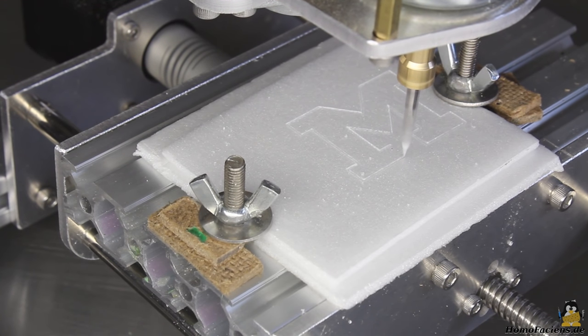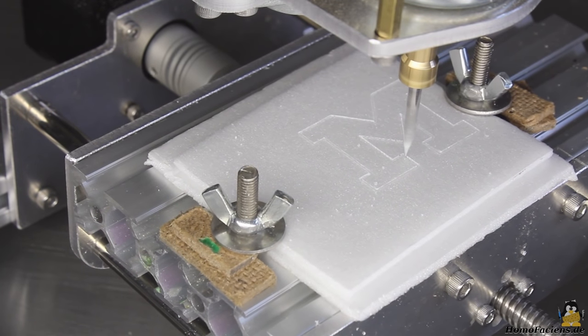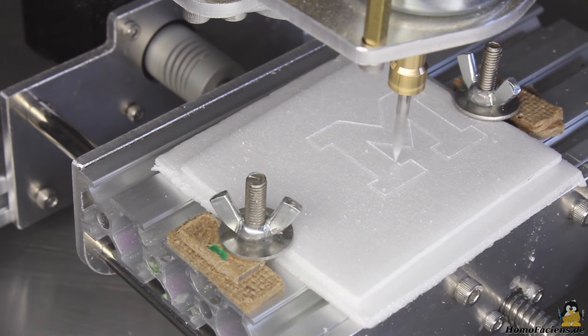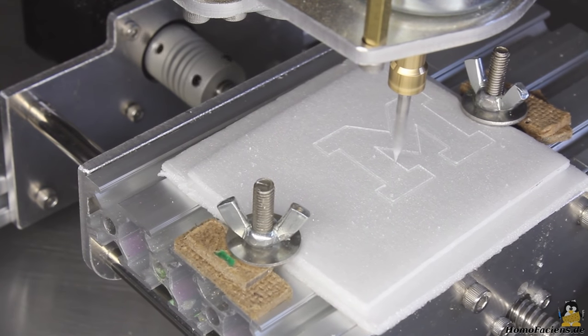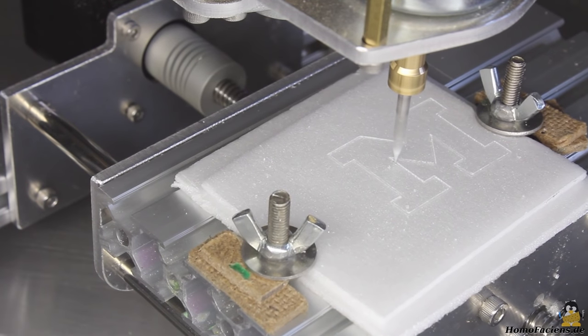You can not only engrave the 3mm Debron, but also cut the material with ease. Put another plate underneath the material to be cut to avoid the milling bit from diving into the aluminum table of the machine. With the high feed rate, the V-bit would crack quickly if that happens.